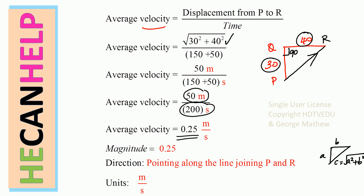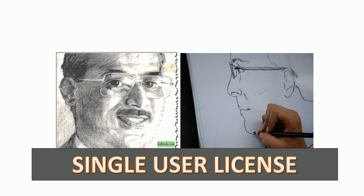The magnitude of the average velocity is 0.25, the direction is from P to R, and the unit is meters per second. This is George Matthew signing off for both me and my dad.